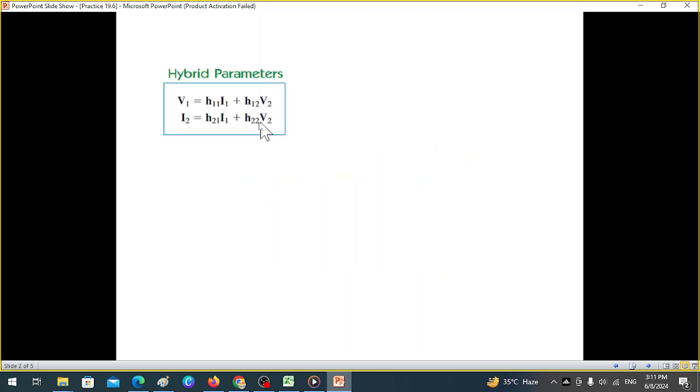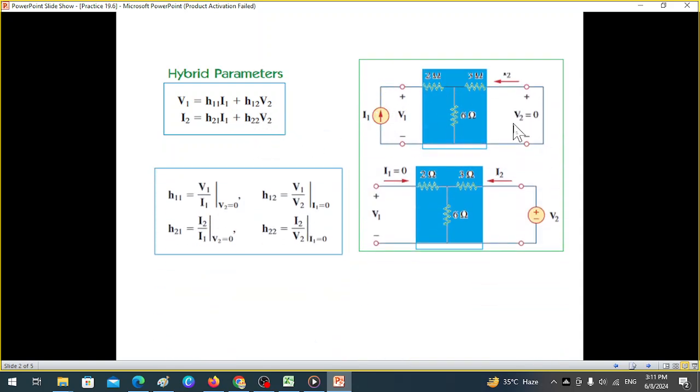So let's see what is a hybrid parameter equation. You can see V1 and I2 are given in terms of H parameters, and if you see these two circuits, it will be easier to follow or understand. H11 is V1 from here. If we put V2 equal to 0,